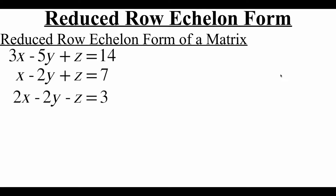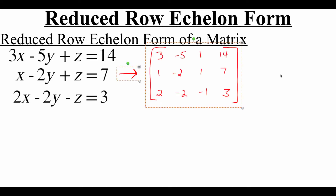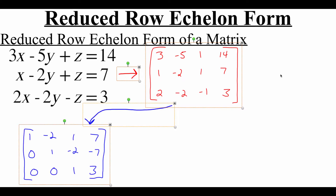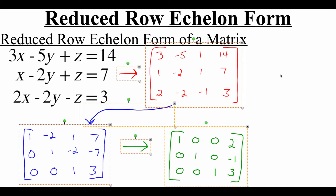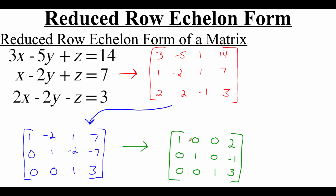So what we've done up to this point is we've taken a system of equations, turned it into an augmented matrix, performed some operations on it to turn it into a row echelon matrix, and then our next step is to take this row echelon matrix and put it in what's called reduced form. What you'll notice about reduced form is we've got ones along the main diagonal and the other entries are all zeros. This is a way for us to get the answers from our matrix without needing to put the variables back in.